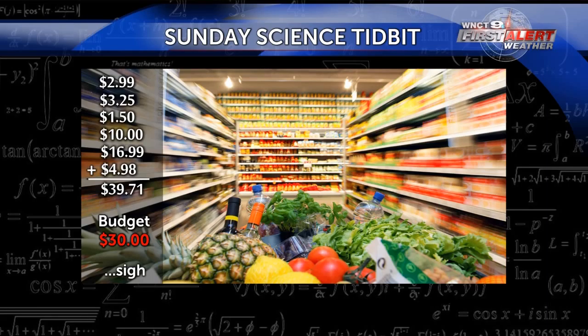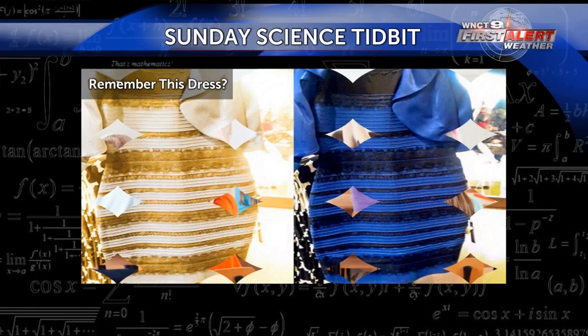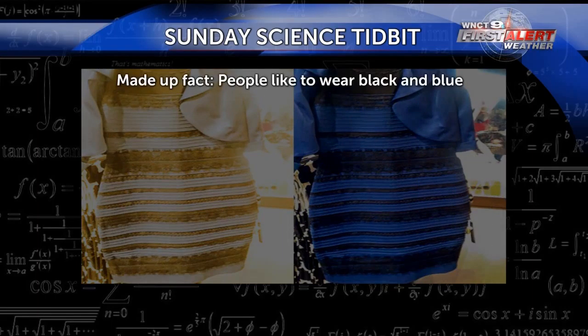Consensus models take an average from the different model members, but there's always a degree of uncertainty. So here's a fun real-world example. Remember that controversial black and blue or white and gold dress? Well, let's make up some fact that people like to wear black and blue clothes — not actually true, but we'll pretend for this example.